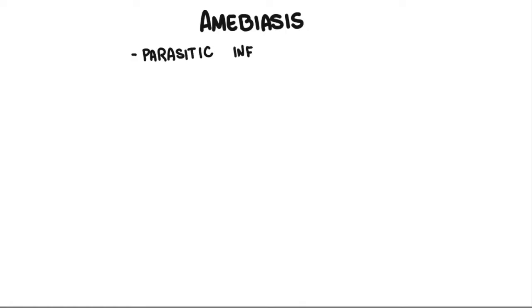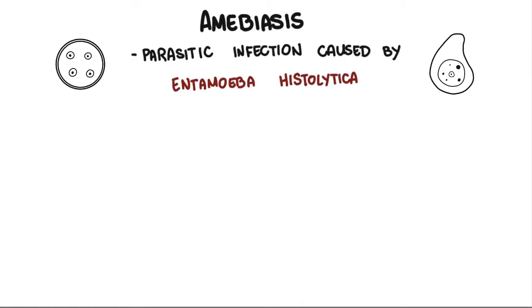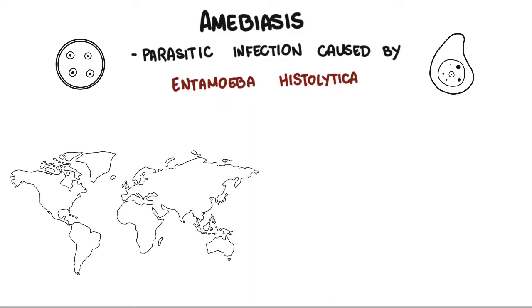Amoebiasis is a parasitic infection caused by Entamoeba histolytica. Entamoeba histolytica infection is common worldwide and can affect anyone, although it is more common in people who live in tropical areas with poor sanitary conditions.